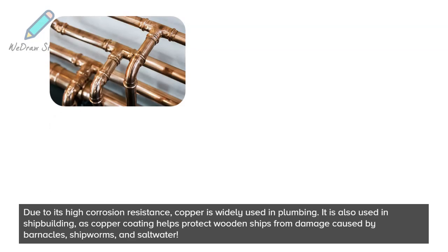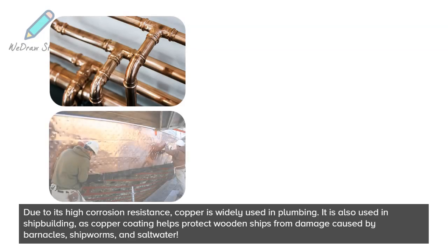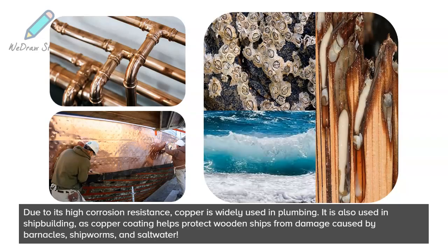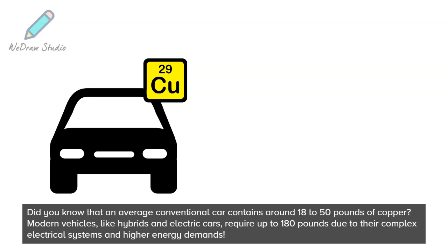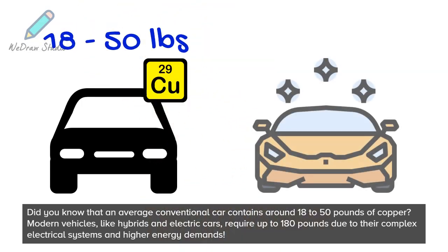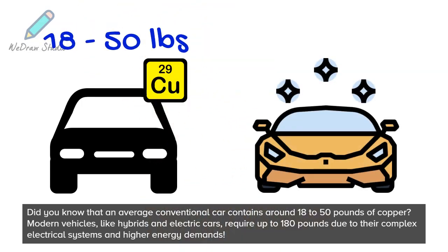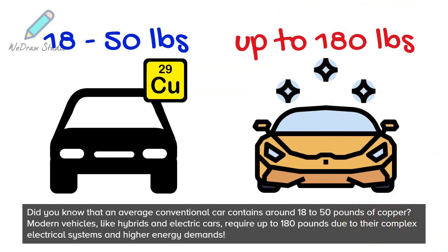Copper is also used in shipbuilding, as copper coating helps protect wooden ships from damage caused by barnacles, shipworms, and saltwater. Did you know that an average conventional car contains around 18 to 50 pounds of copper? Modern vehicles, like hybrids and electric cars, require up to 180 pounds due to their complex electrical systems and higher energy demands.